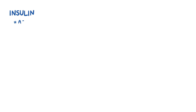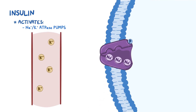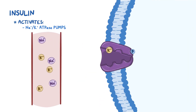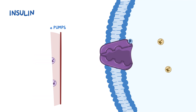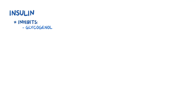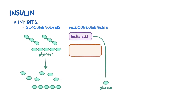Finally, insulin activates sodium potassium ATPase pumps and shifts potassium into intracellular space, thereby decreasing potassium levels in the blood. On the flip side, insulin inhibits glycogenolysis, which stands for the breakdown of glycogen, and gluconeogenesis, which is glucose production from lactic acids and non-carbohydrate molecules.